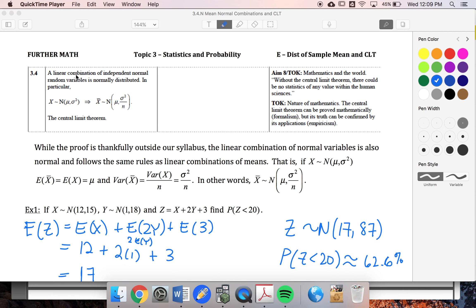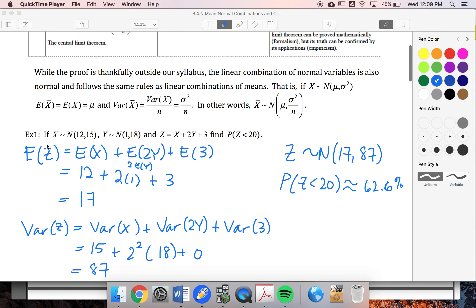All right, so last video we talked about a linear combination of independent normal variables, and we took different independent normal variables. Now let's think about what happens if we take the same normal variable.